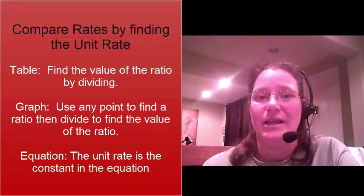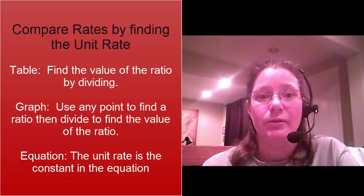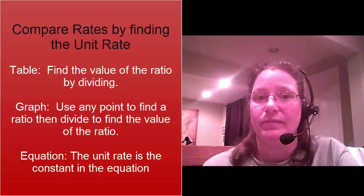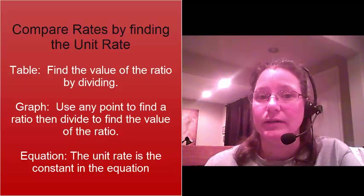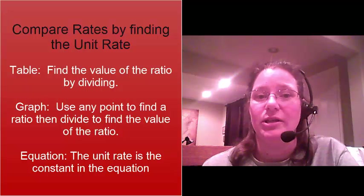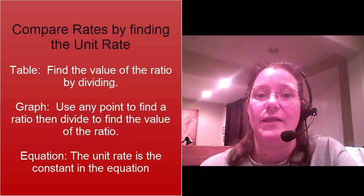Remember, in each of these cases, you're going to find the unit rate to compare. With a table, you just need to divide any one of the ratios. With a graph, you're going to find one point and divide to find the unit rate. With an equation, you just need to identify which number is the unit rate in the equation.